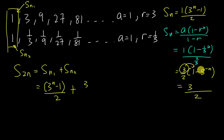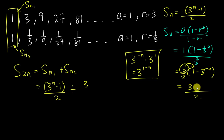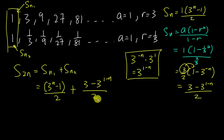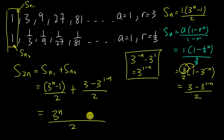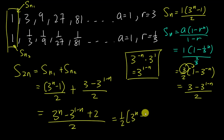Multiplying three into both terms of (1 - 3^(-n)) gives 3 - 3^(-n+1), which is 3 - 3^(1-n). So Sn2 equals (3 - 3^(1-n)) / 2. Now adding Sn1 and Sn2 together over the common denominator 2: the numerator becomes (3^n - 1) + (3 - 3^(1-n)) = 3^n - 3^(1-n) + 2. Taking out the factor of one-half gives the final result.